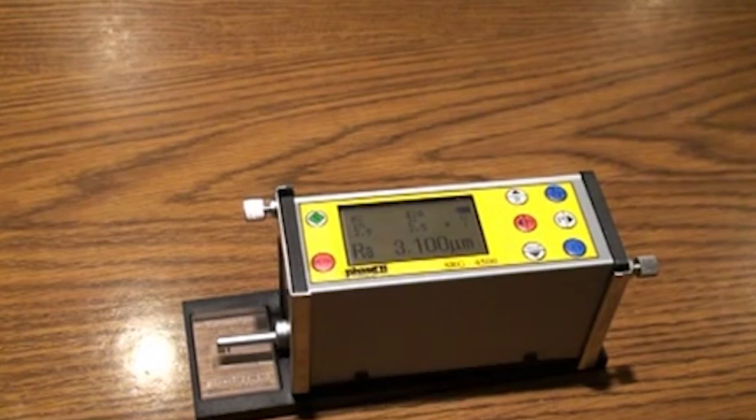The SRG 4500 also has an optional fixturing stand. The unit attaches to the stand using two screws on the right side of the unit under the height adjusters. Fixture adapters for height gauges and magnetic bases are also available.